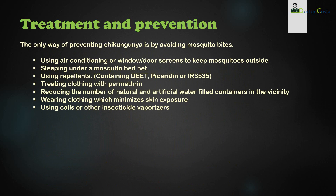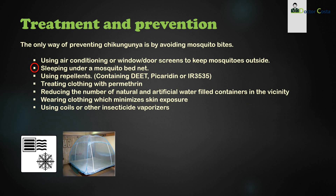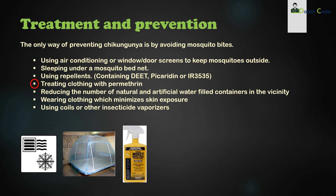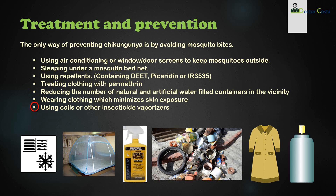The only way of preventing chikungunya is by avoiding mosquito bites. Prevention measures include using air conditioning or window and door screens, sleeping under a mosquito bed net, using repellents containing DEET, picaridin, or IR-3535 compounds, treating clothing with permethrin, reducing natural and artificial water-filled containers nearby, wearing clothing that minimizes skin exposure, and using coils or other insecticide vaporizers.